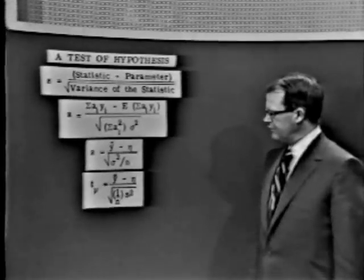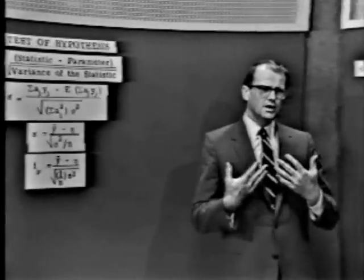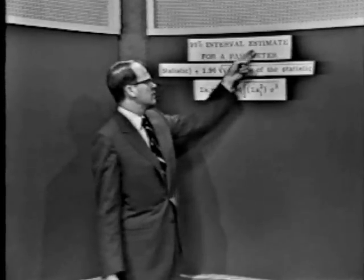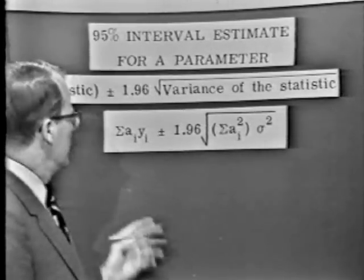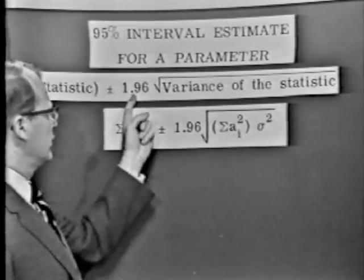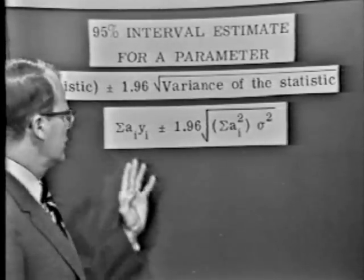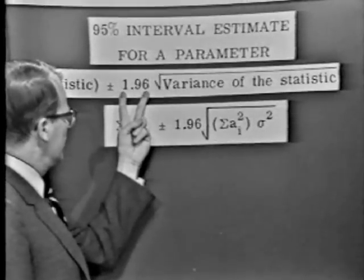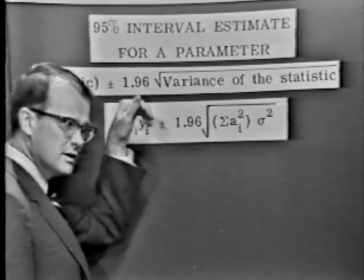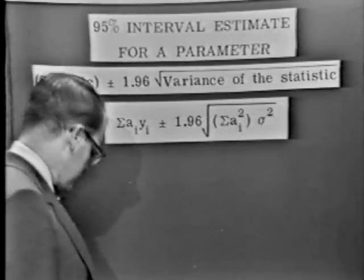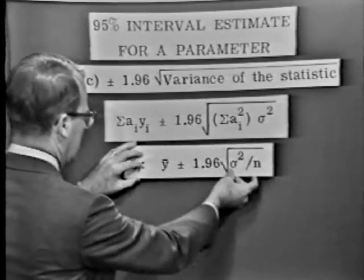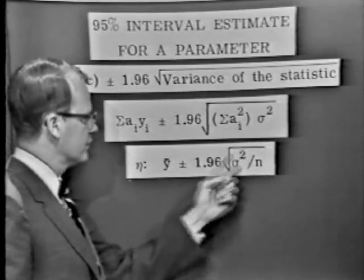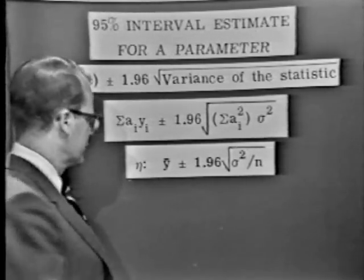If you'd like to perform an interval estimate for the mean, let's say we wanted to make a 95% interval estimate for the mean. You know that we have to choose the appropriate statistic plus or minus 1.96 times the square root of the variance of the statistic. This gives us the limits for that parameter. The 1.96 is that value of z, the normal deviant, which leaves 2.5% in the tail of the curve. The limits would be y-bar plus or minus 1.96 times the square root of sigma squared over n.